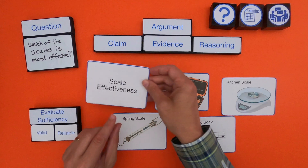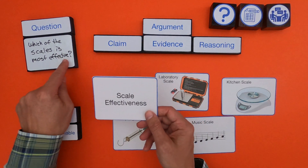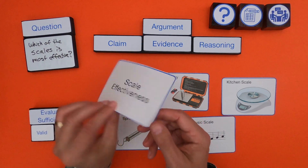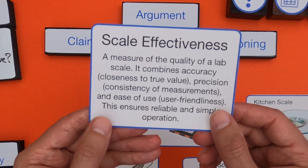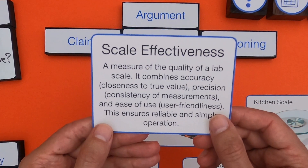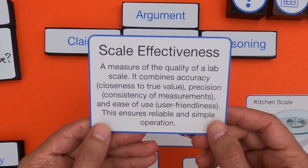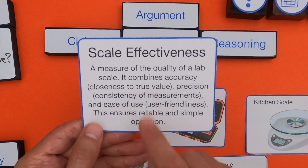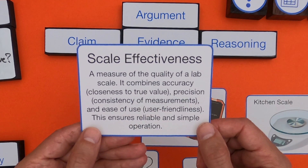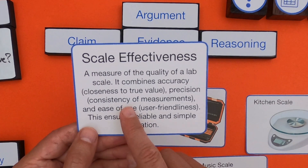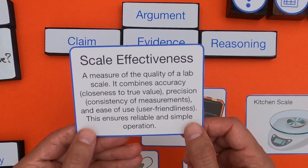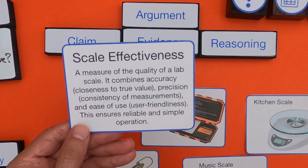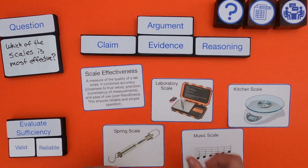One thing we should always do is look at the definition. So for scale effectiveness: it's a measure of the quality of a lab scale. It combines accuracy — being close to the true value — precision, meaning consistency of measurements, and ease of use — is it user friendly? This ensures a reliable and simple operation.